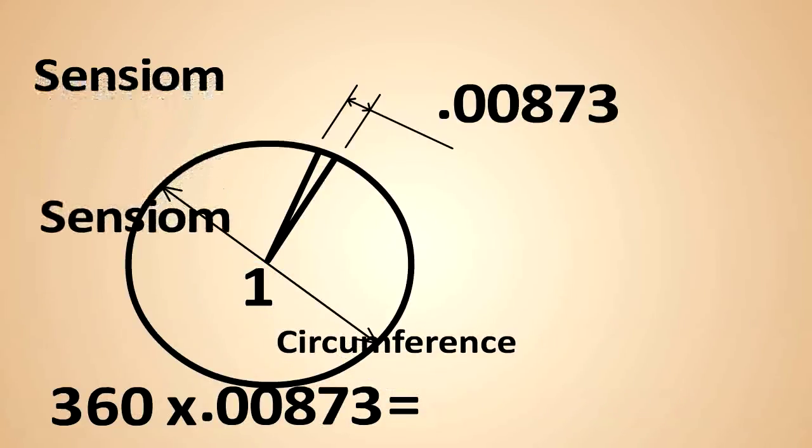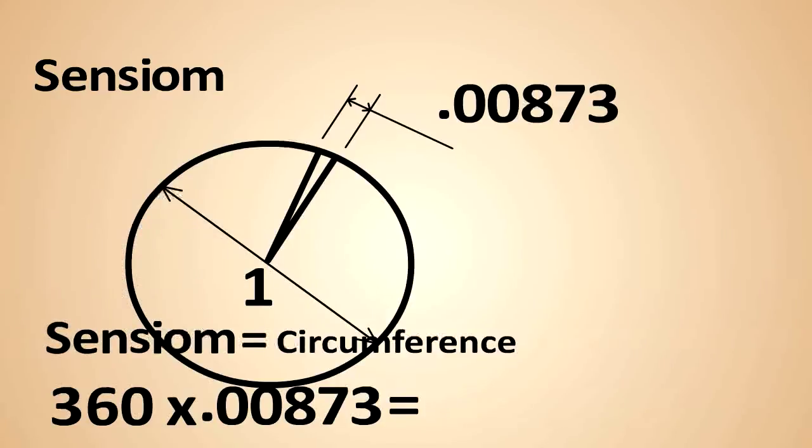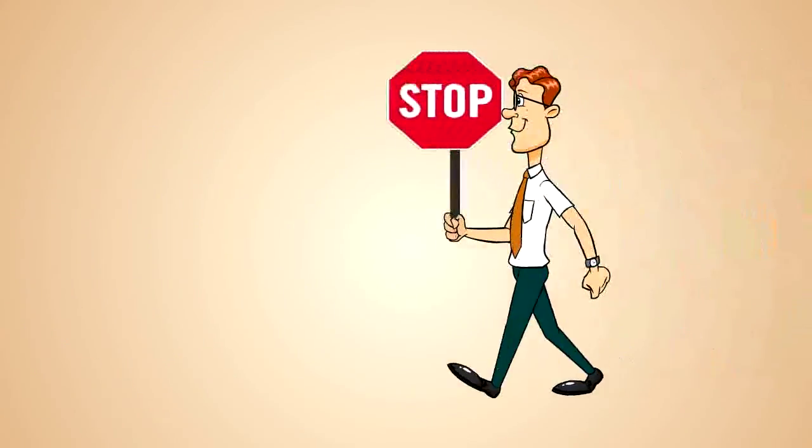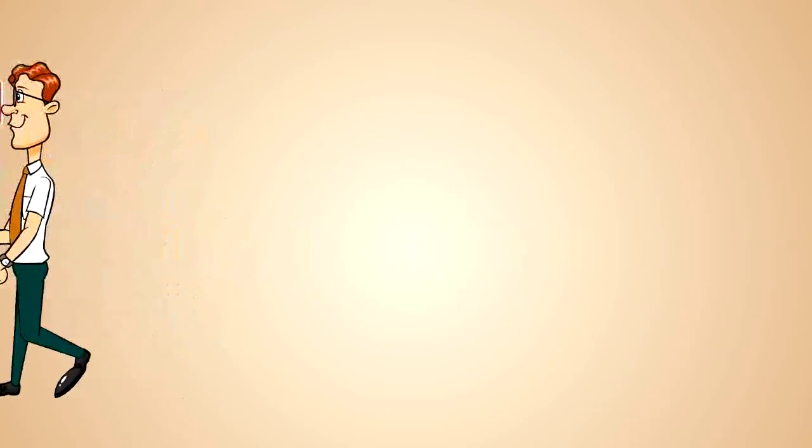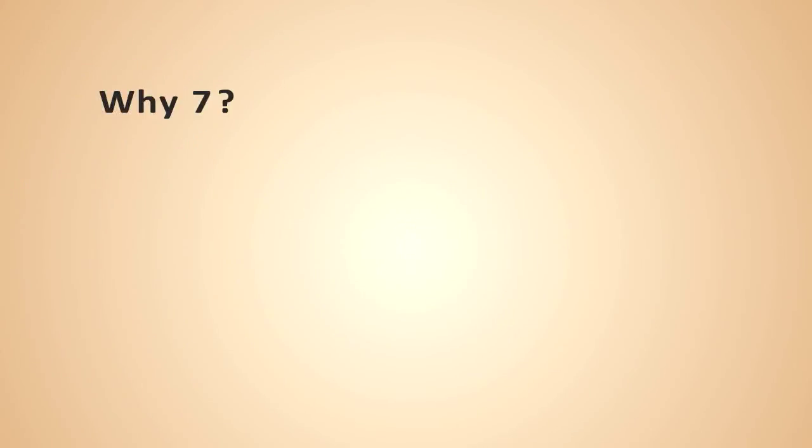But two issues still remain. One: if it's easier to use a standard circle of one unit, why did they use seven units? Seven is the only number from one to ten that cannot be divided into 360. Two: was the old pi more accurate than the new centium?